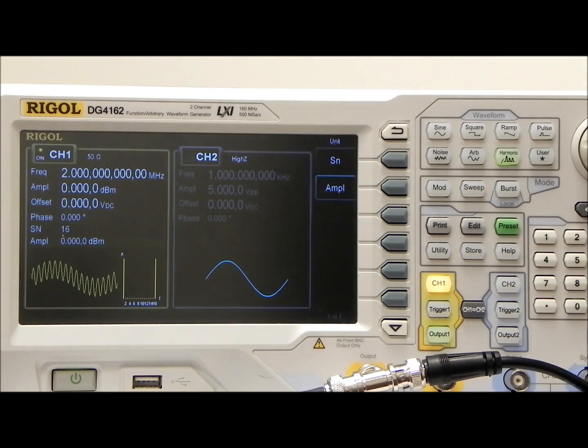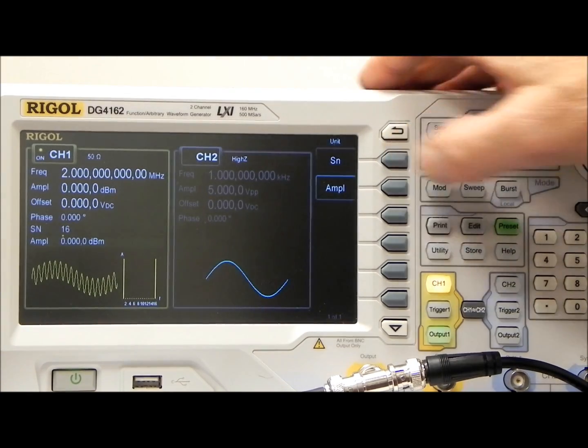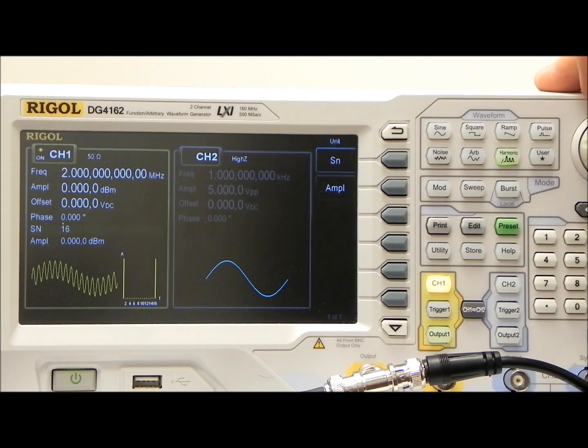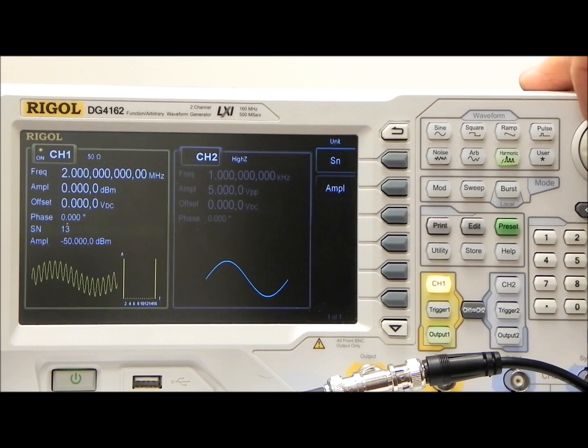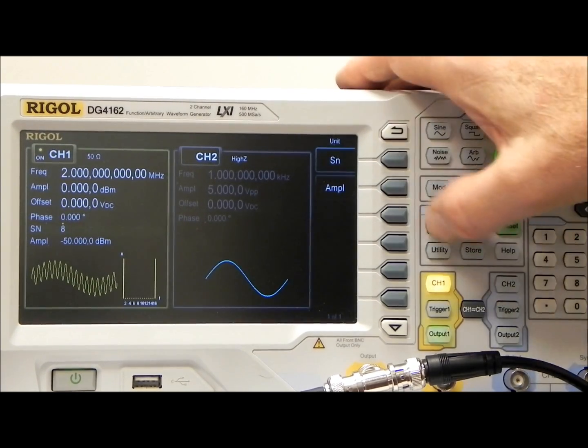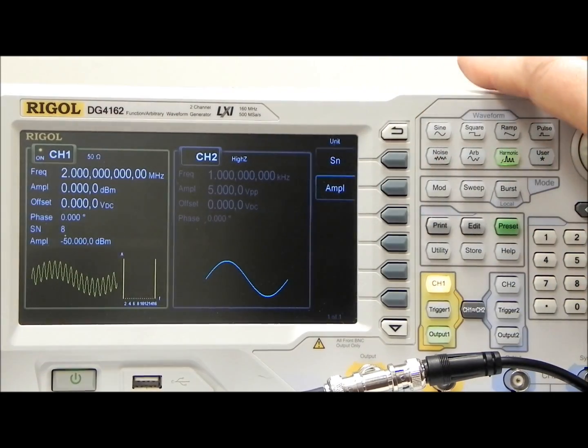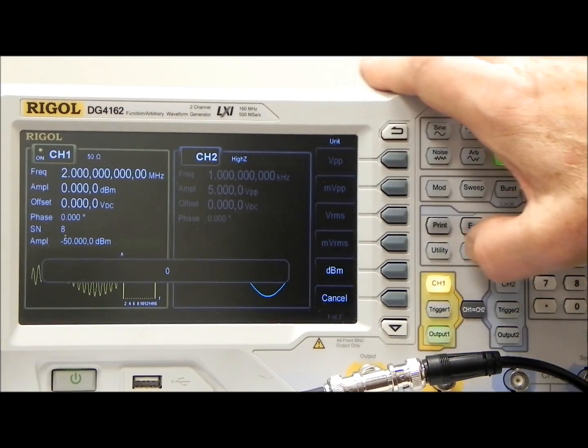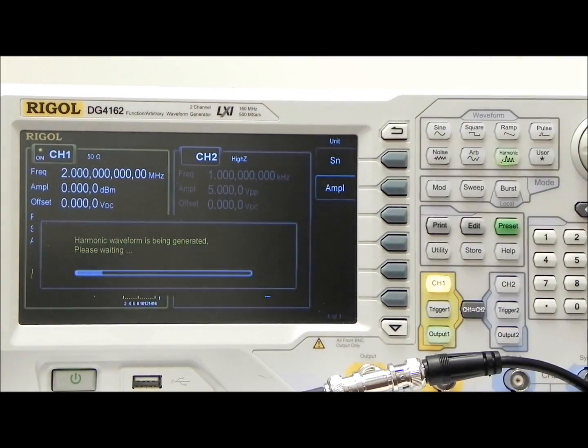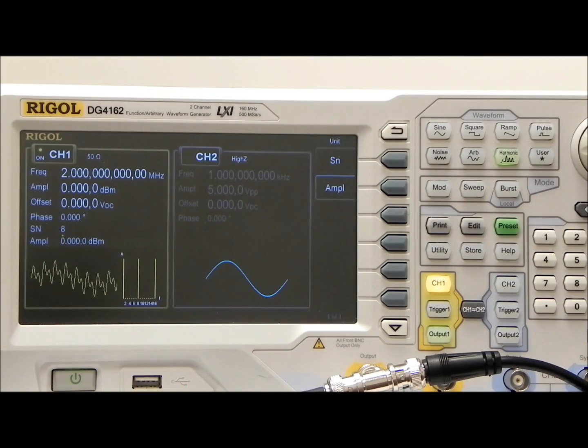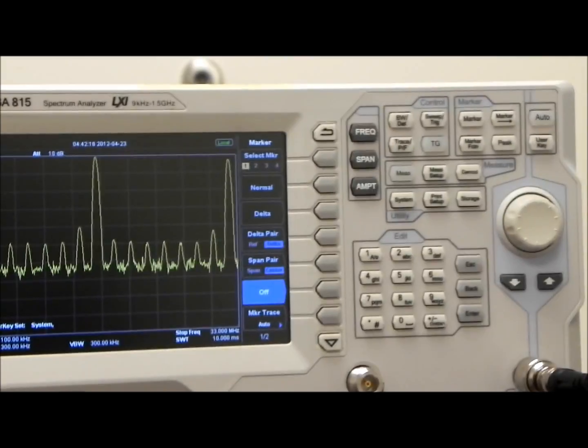But now as an example, I'm going to go back to the signal level and let's go here to the eighth harmonic. Go to the amplitude and let's put one in at 0 dB. And you'll notice that it proceeds to go through the patterns.